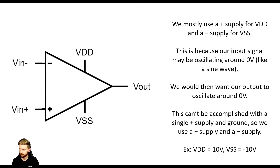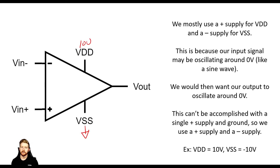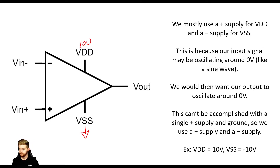You might ask why we use +10V and -10V on the power inputs. The reason is that it's nice to have a symmetric power supply. If we use 10 volts and ground instead, we'd be limited to only positive signals. We'll see later that some amplifiers, like the inverting amplifier, can produce negative signals. So it's easier to analyze with symmetric input power — +10V and -10V — rather than 10V and ground. We'll tackle non-symmetric supply problems when we come to them.